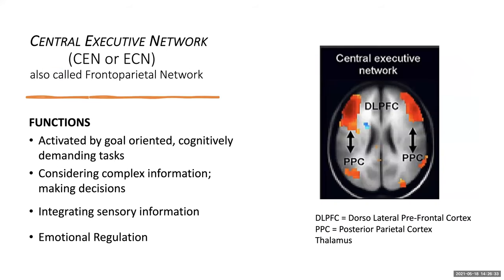The central executive network — also called CEN, ECN, or Frontal Parietal Network — is activated by goal-oriented, cognitively demanding tasks. It allows us to consider complex information, make decisions, and integrate sensory information. The CEN is also involved in emotional regulation.